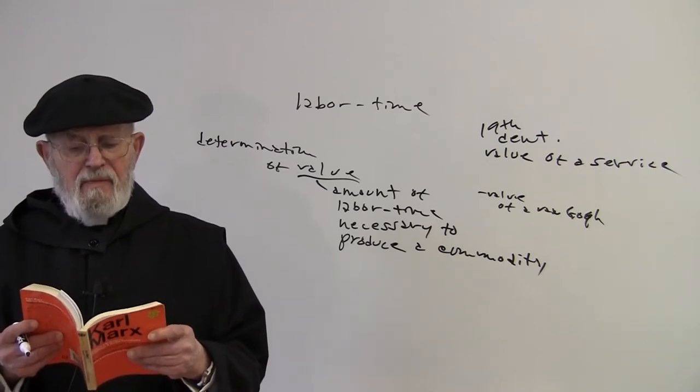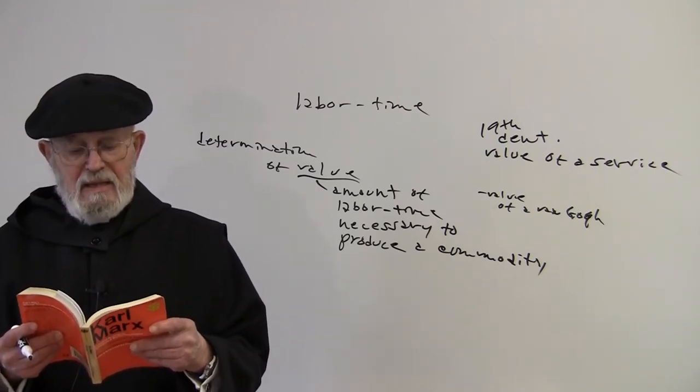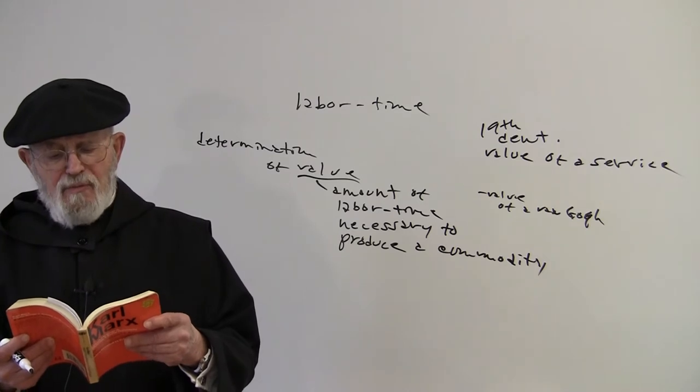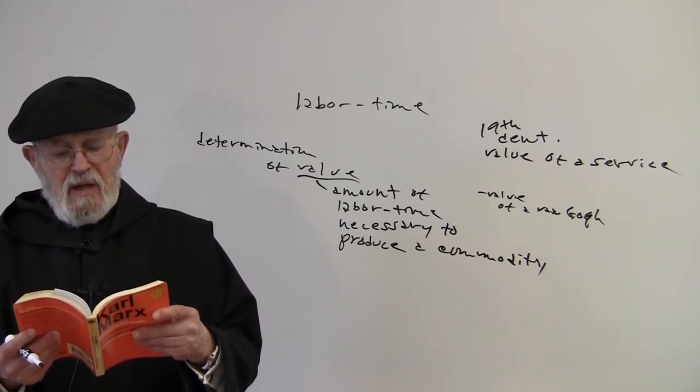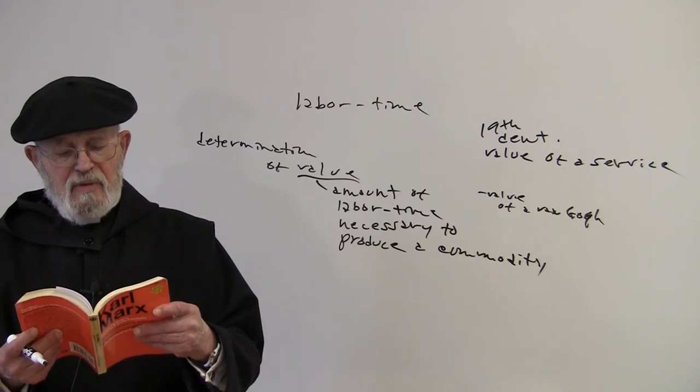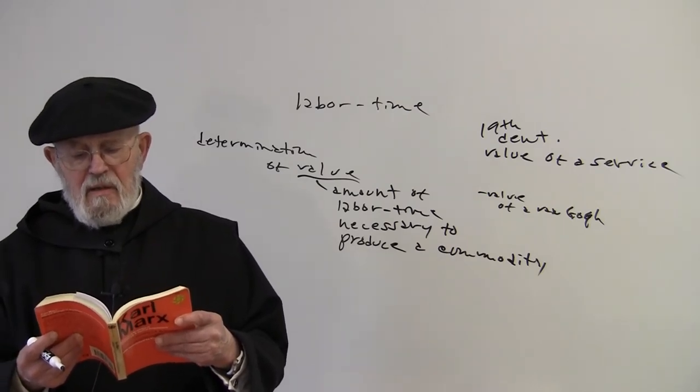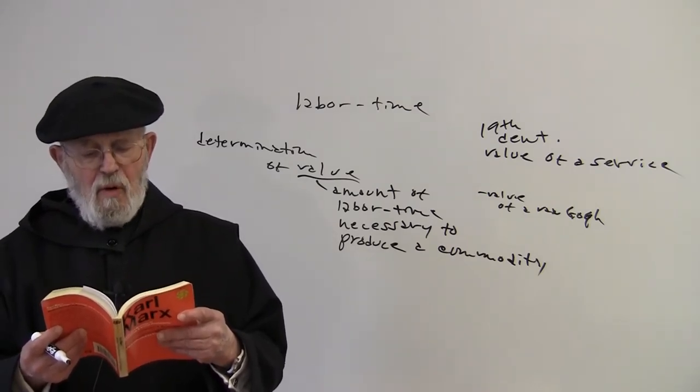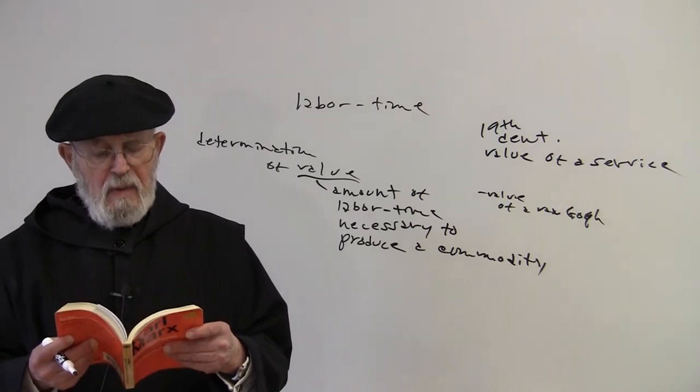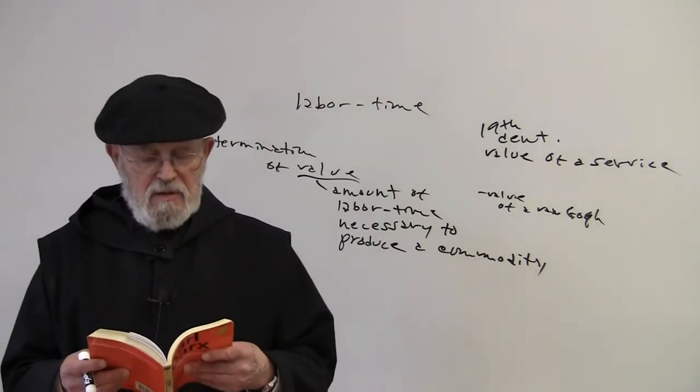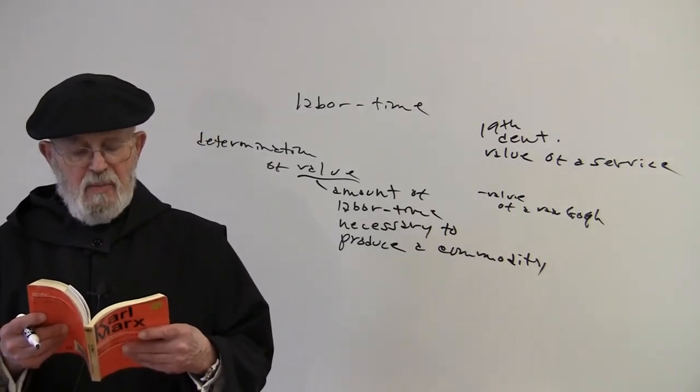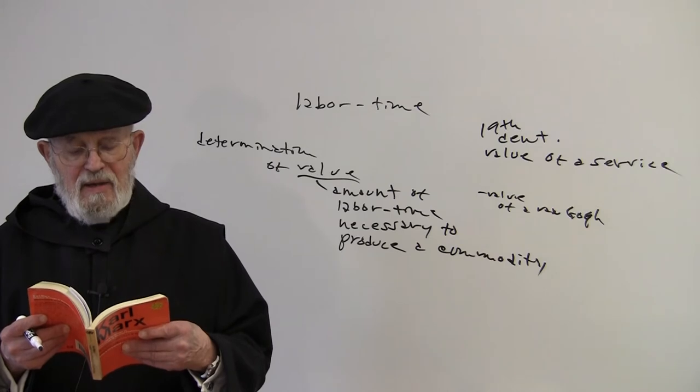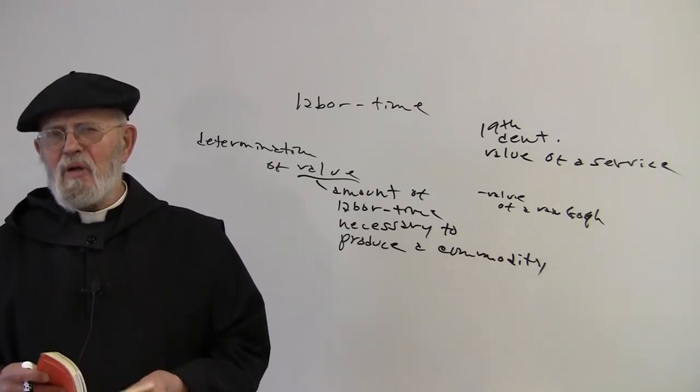Here, middle of page 106. The particular and natural form of labor, and not as in society based on production of commodities in general abstract form, is the immediate social form of labor. And as Marx goes on to say, compulsory labor is just as much measured by time as commodity-producing labor.